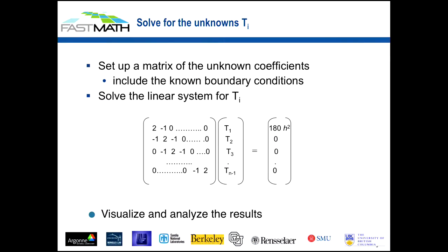Now I've got a whole bunch of unknowns — my T sub i's — and two boundary conditions. I set this up into a matrix, which is just a big linear array of numbers. You can see those two minus one entries for every T sub i. I set my boundary conditions up on the right-hand side of the equation, and now all I have to do is solve this linear system of equations. I'll know the answer at each of the T sub i discretization points. Then you visualize the results, analyze them, and you're done. That's numerical analysis at the very highest level with the simplest example.